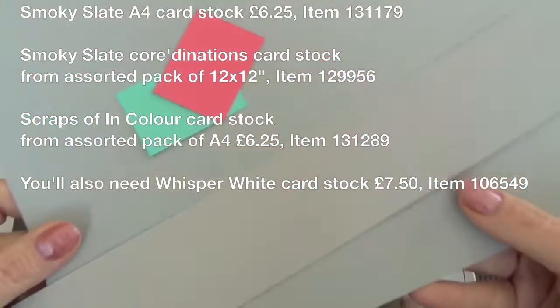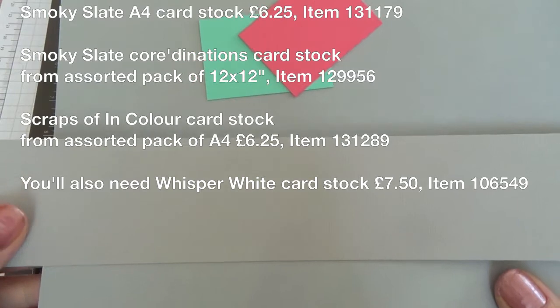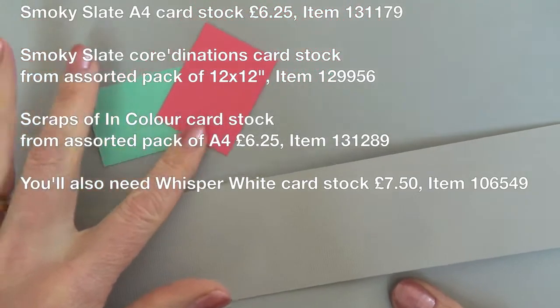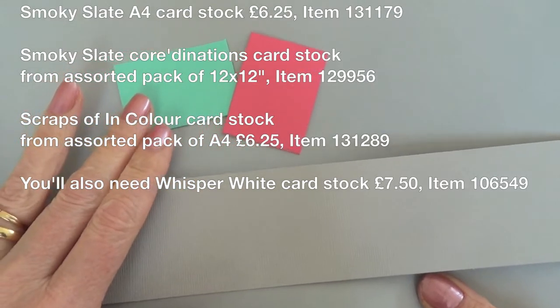You'll also need smoky slate cardstock in both smooth and coordinations for a little bit of contrast and just a couple of scraps of cardstock, strawberry slush and coastal cabana.